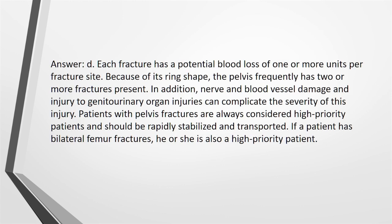Answer: D. Each fracture has a potential blood loss of one or more units per fracture site. Because of its ring shape, the pelvis frequently has two or more fractures present. Additionally, nerve and blood vessel damage and genitourinary organ injuries can complicate the severity. Patients with pelvic fractures are always high-priority and should be rapidly stabilized and transported. Bilateral femur fractures also make a patient high-priority.